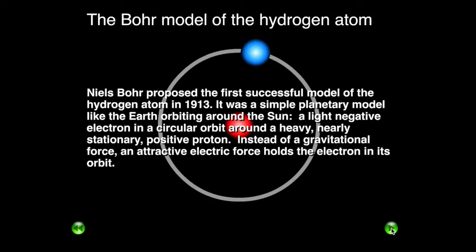The electron in a hydrogen atom travels around the nucleus in a circular orbit. The energy of the electron in an orbit is proportional to its distance from the nucleus. The further the electron is from the nucleus, the more energy it has.